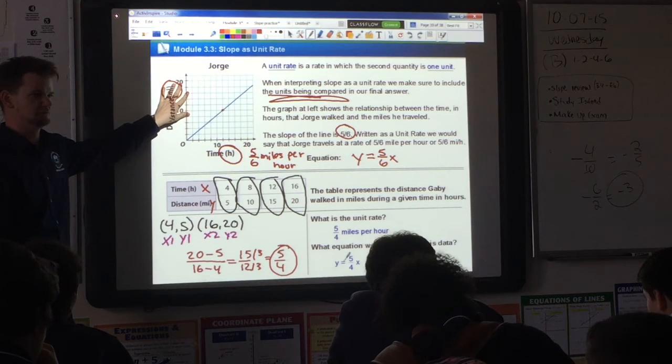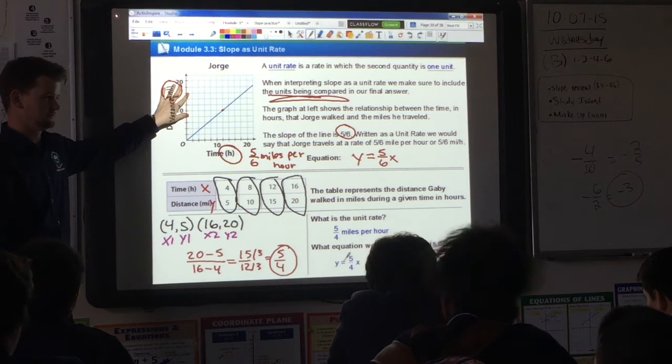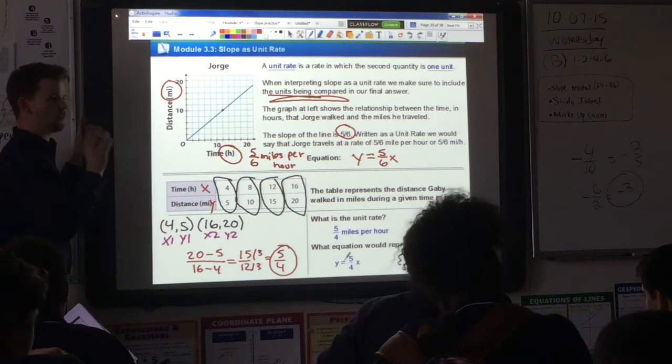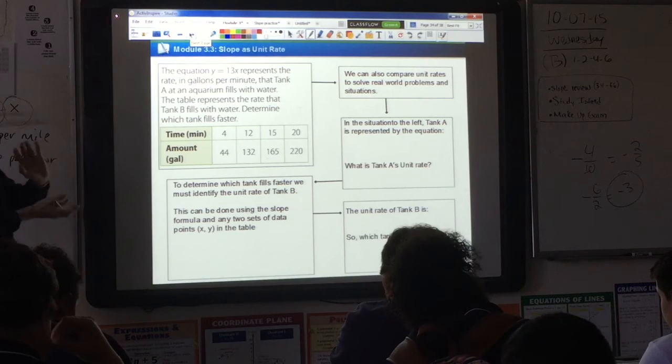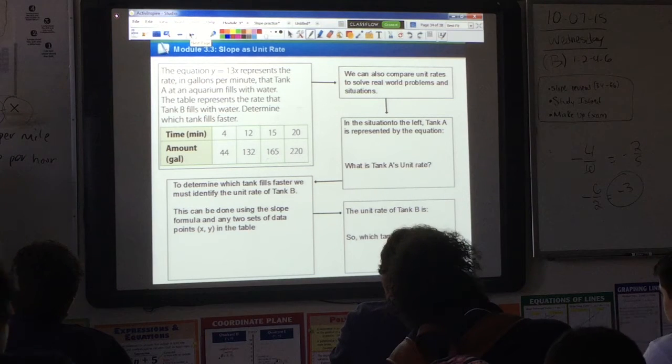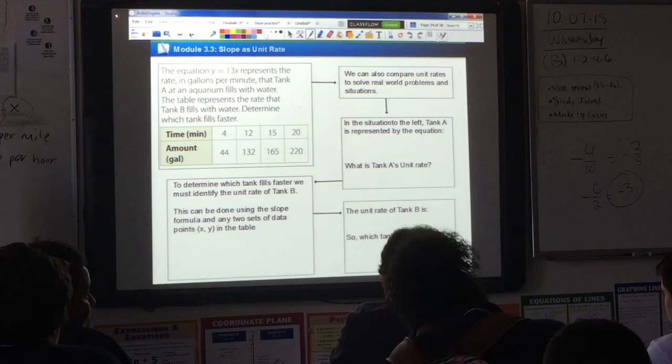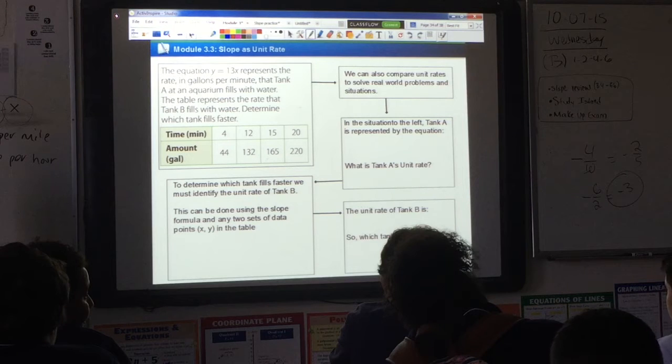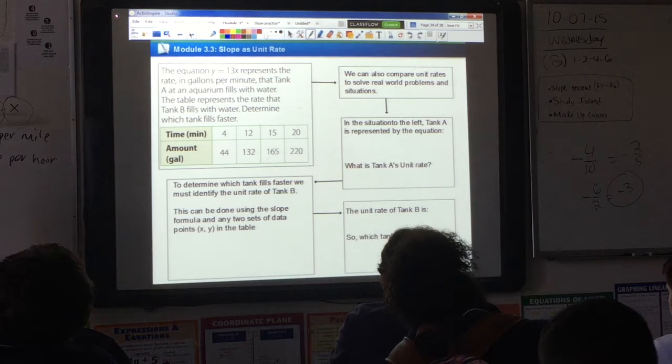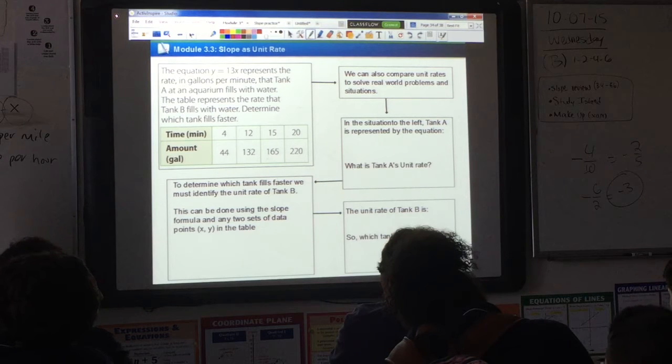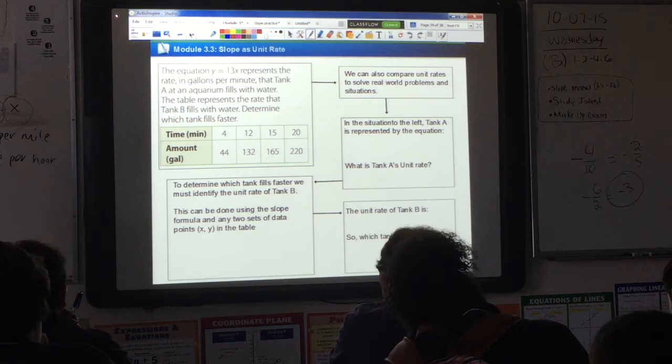Any questions on this first page? Anybody? No? We all know what we're doing? So far we were just finding one unit rate. Well, let's see what happens if we have to compare two different unit rates. Let's go to Jennifer. Can you read the scenario for me?